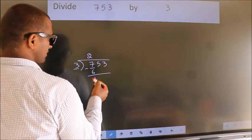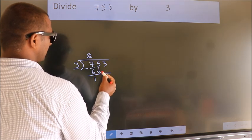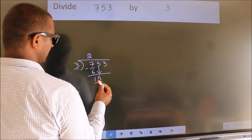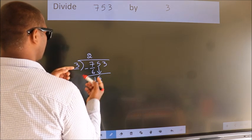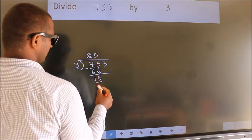After this, bring down the beside number. So 5 down. So 15. When do we get 15 in the 3 table? 3 times 5 equals 15.